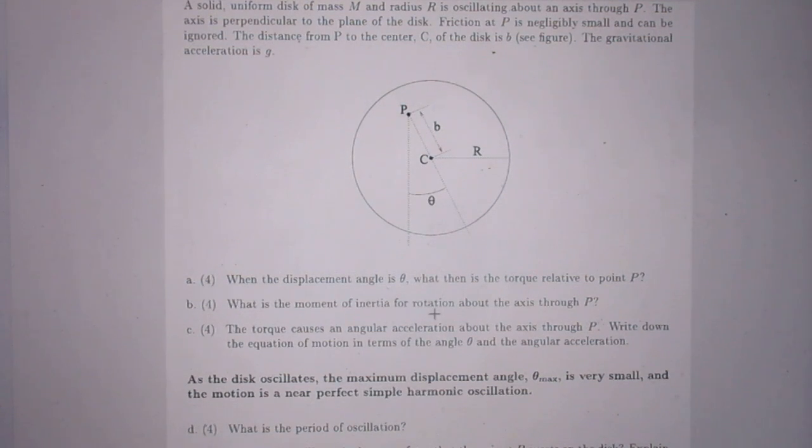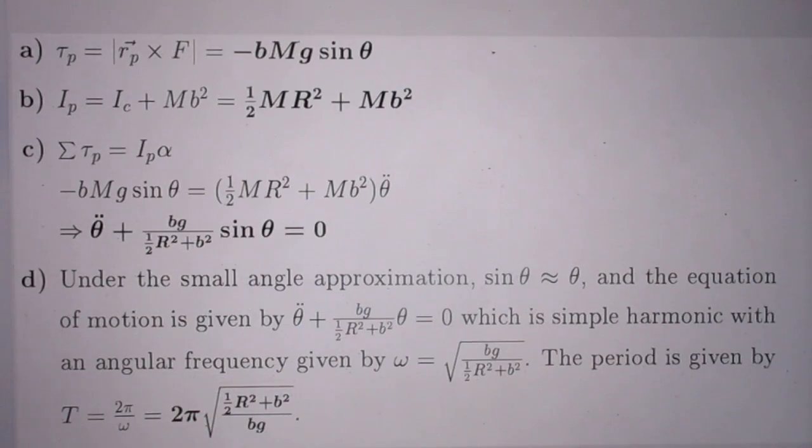What is the moment of inertia of rotation about your axis through P? Well, you may remember the parallel axis theorem. It is the moment of inertia for rotation about C plus M times B squared. That's just the way it is. So you see here it is the moment of inertia about C plus MB squared. Very simple.